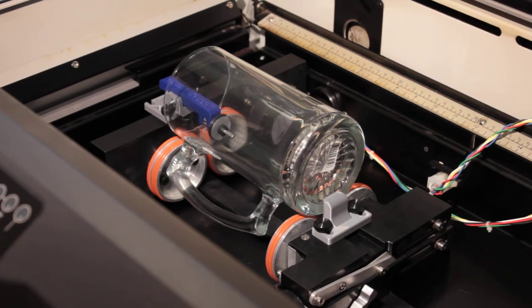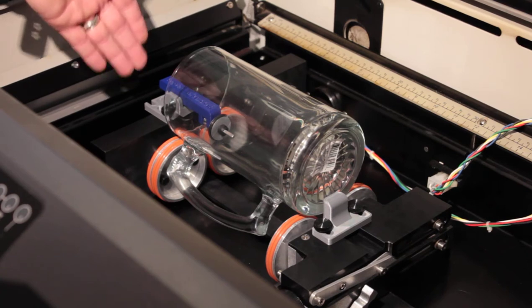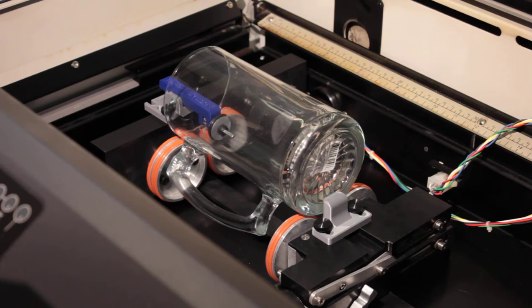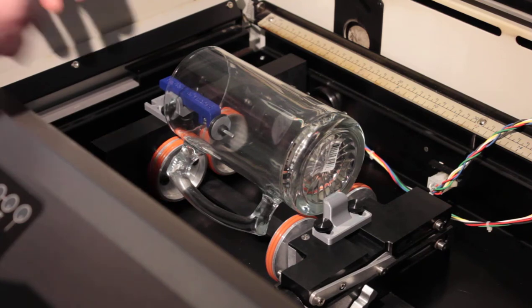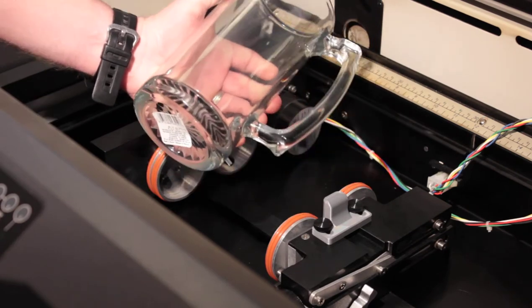One of the added benefits that you get with this design is if you put the rotary clamp on the correct side on your drive side and put the backstop on the adjustable side, you actually create a way to engrave these large beer mugs with no problem.